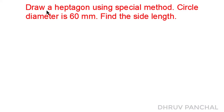Here is our data for the problem: draw a heptagon using the spatial method, circle diameter is 60 mm, and also find the side length.